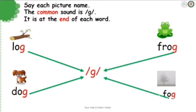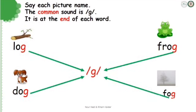So, my clever kids, what is the common sound here? Log, Dog, Frog, and Fog. Great job! It is the sound G. Can you tell me where is its place? Is it at the beginning, in the middle, or at the end? Pay attention, please! Dog, Frog, and Fog. Very good, students! The sound G — place it at the end.